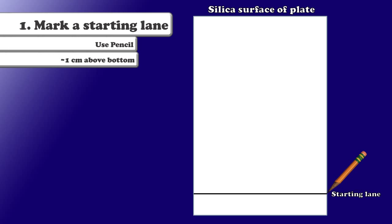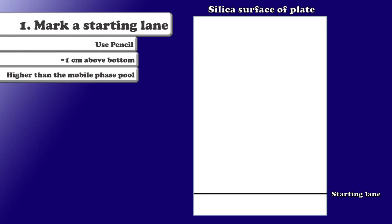We mark it about one centimeter above the bottom of the plate so that when we dip the plate into a shallow pool of mobile phase, we don't submerge the spots. We've got to be sure that it's higher than the mobile phase pool, because if it's not, then the chromatography experiment is going to fail. We have to be sure that our compound only has two options, either dissolve into migrating mobile phase, or stay adhered to the plate. Dissolving into the mobile phase pool can't be an option.